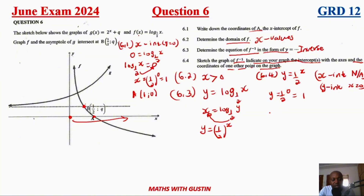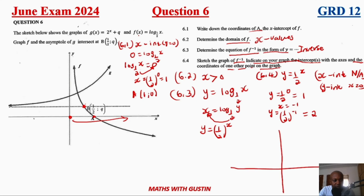For an additional point, let's try x = negative one: y = (½)^(−1) = 2. So the point (−1, 2) is on the graph. We can now plot the y-intercept at (0, 1) and the point (−1, 2), and draw the exponential curve through these points.